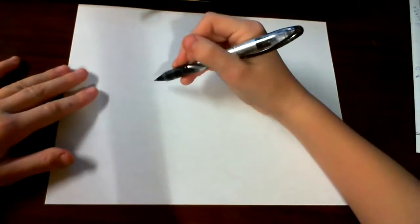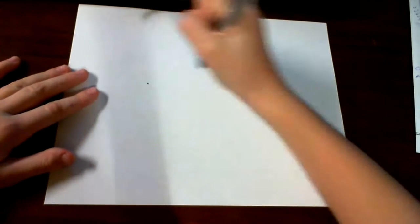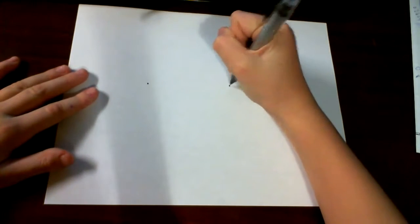What you're going to want to do first is you want to make a dot here and here. And those are going to be the size of the cupcake wrapper, whatever it's called.